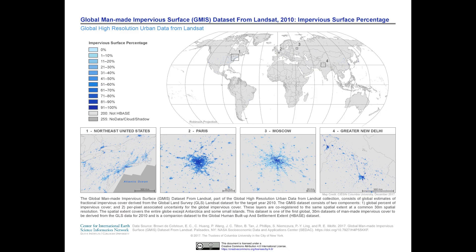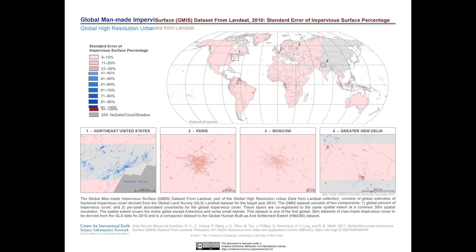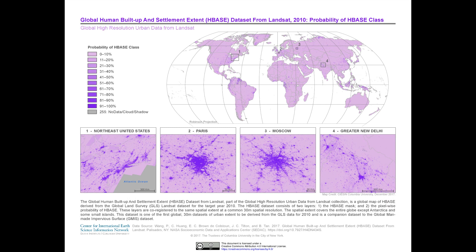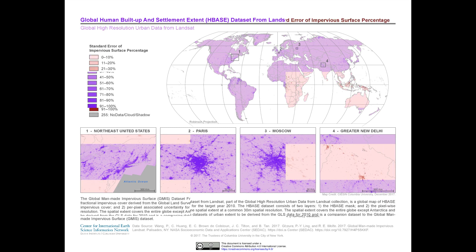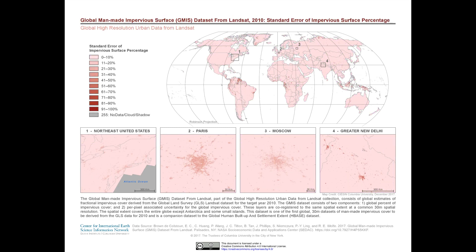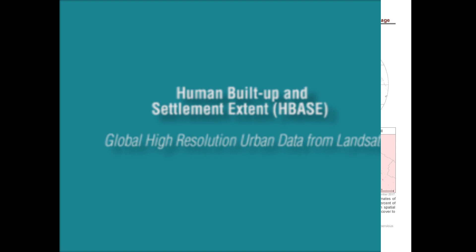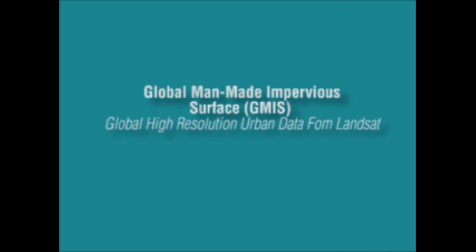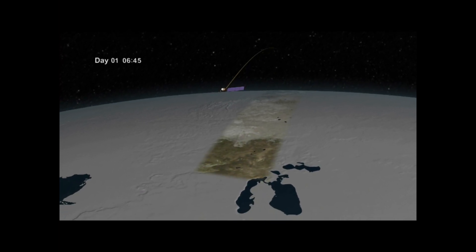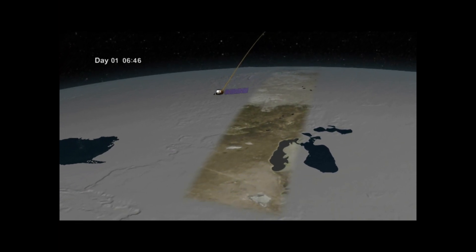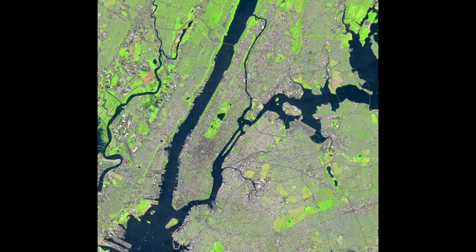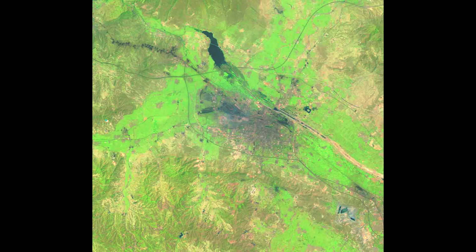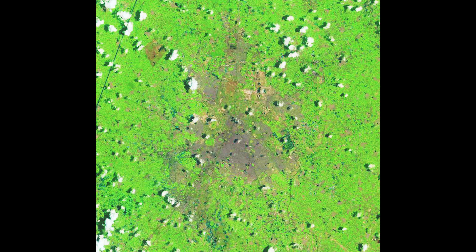Two new high-resolution datasets map global man-made impervious surfaces and urban extents in unprecedented detail. Human Built-Up and Settlement Extent and Global Man-Made Impervious Surface are among the first global 30-meter spatial resolution datasets of their kind, derived from the 2010 Global Land Survey Free Landsat Archive.